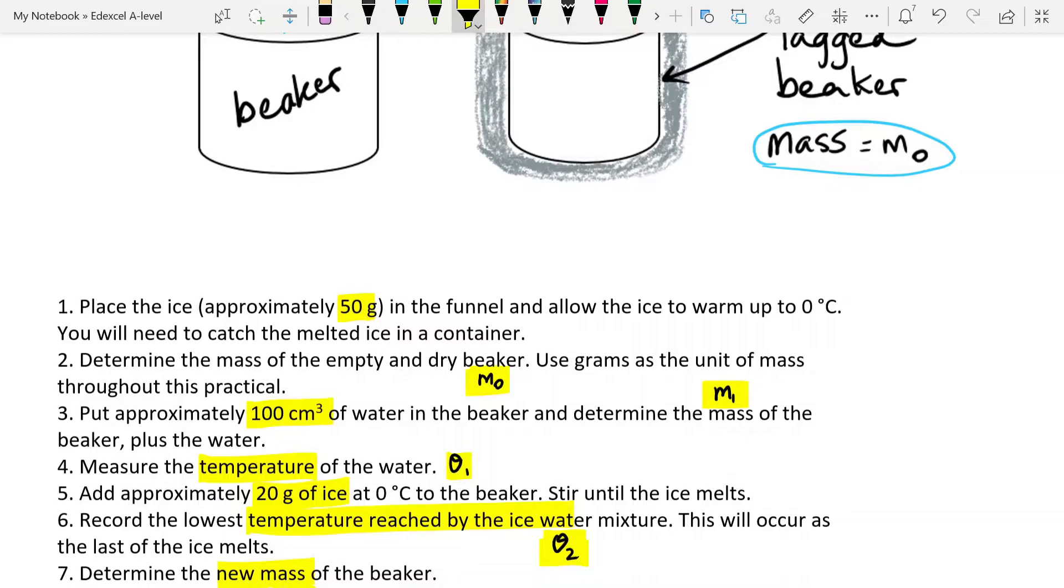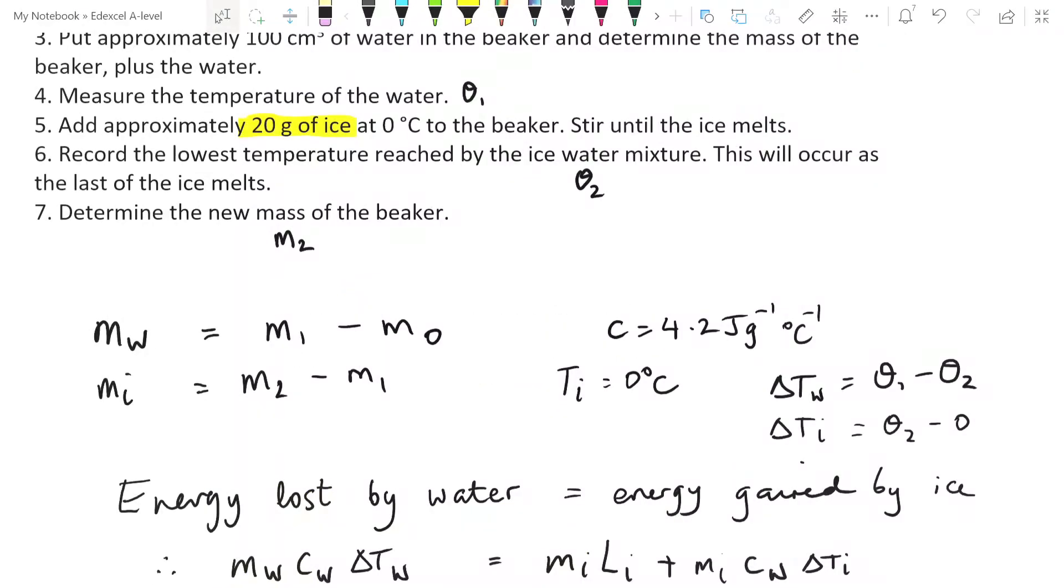We also know, of course, that the original temperature of the ice was zero degrees. Or at least that's an assumption we're making. We try and get it as close as possible. That's pretty much it for the experiment.